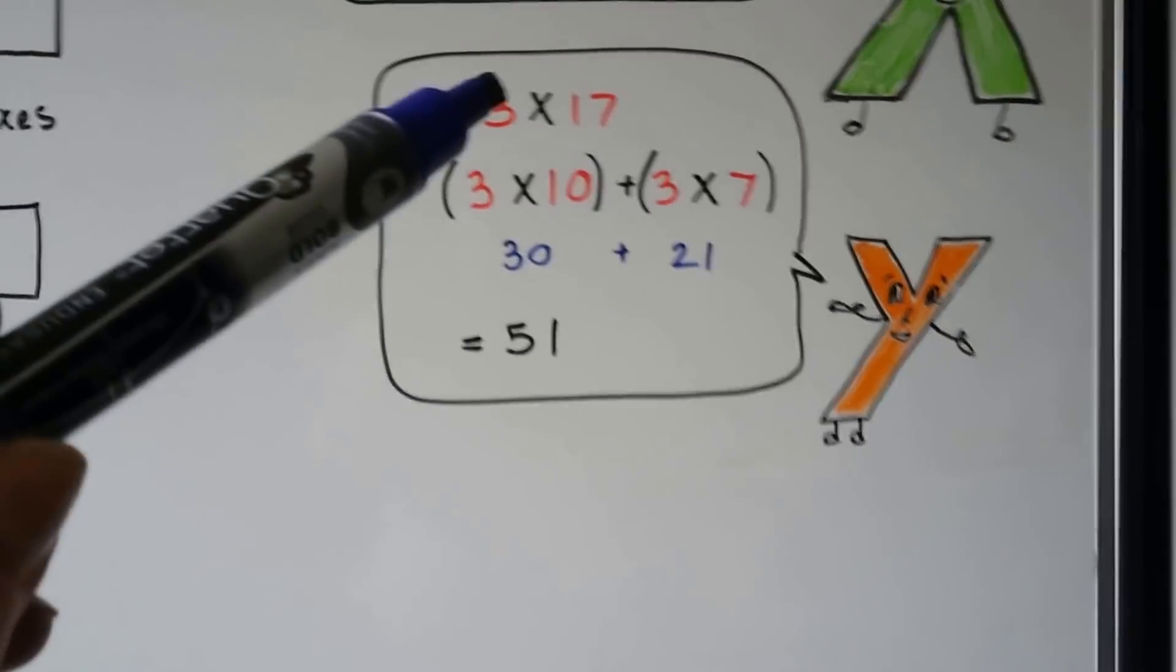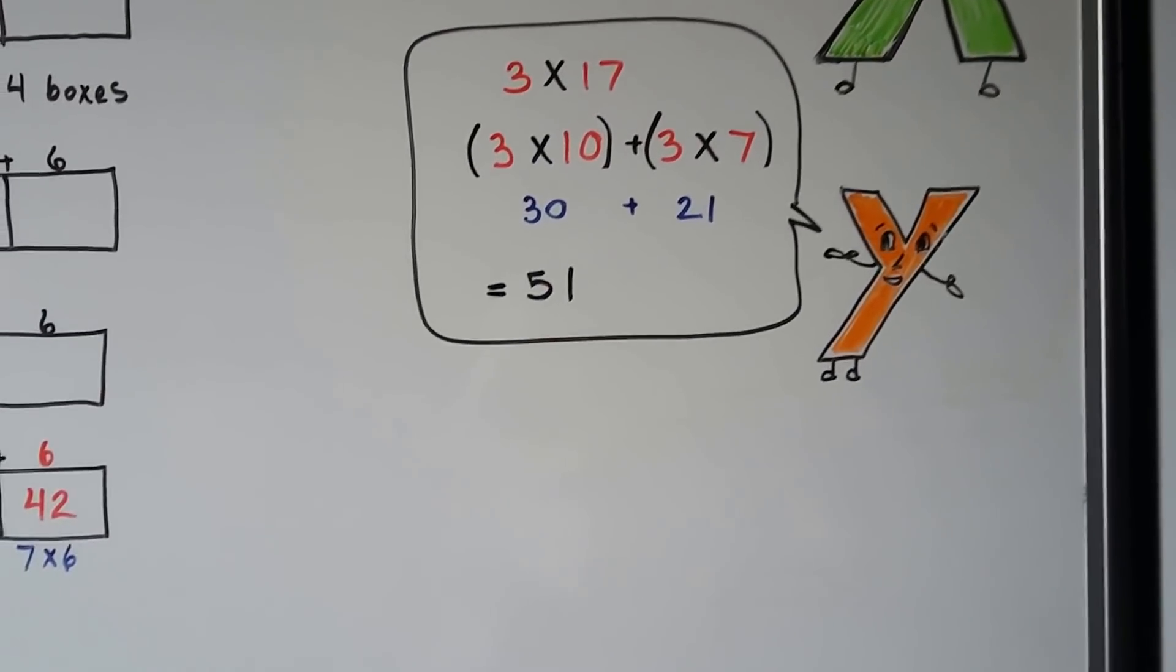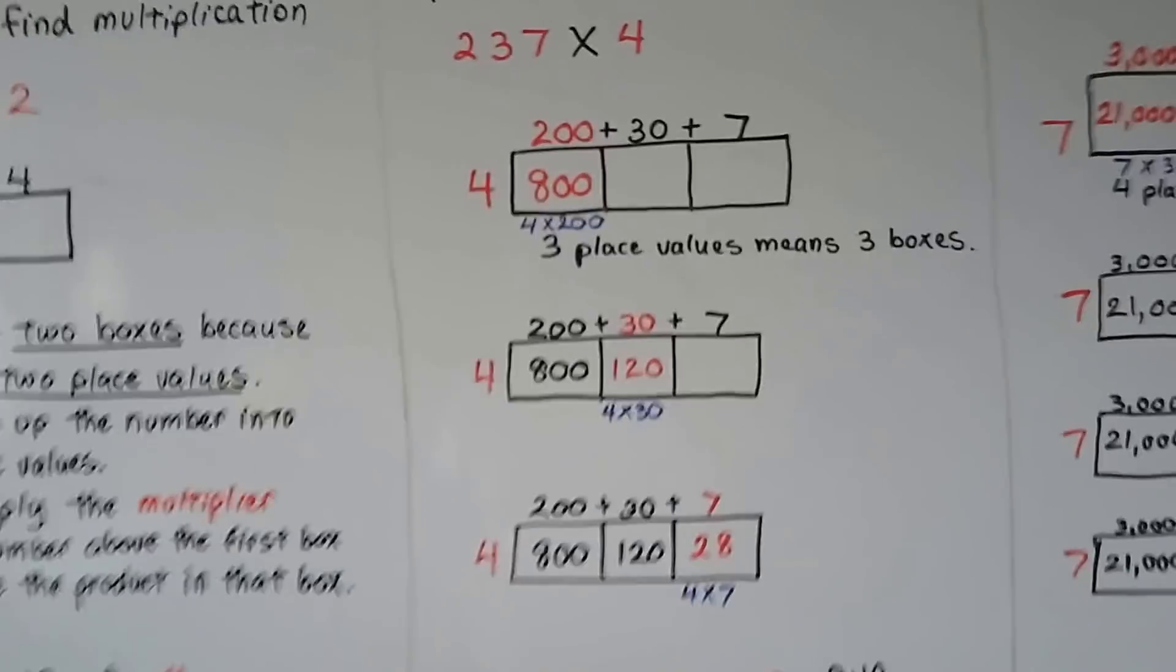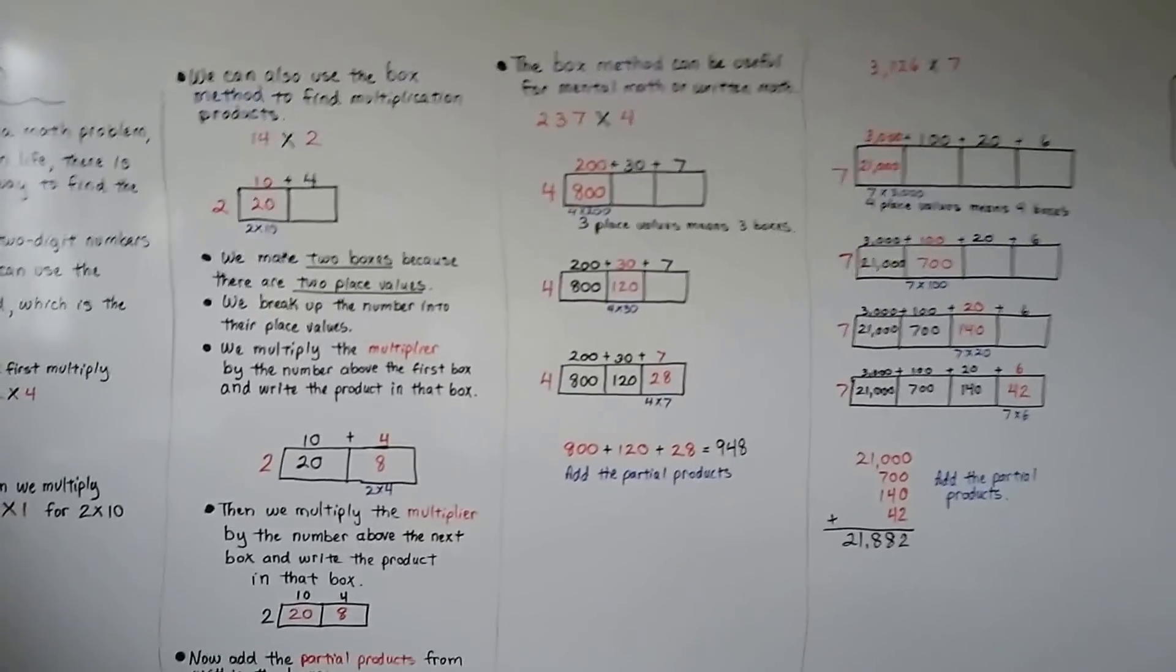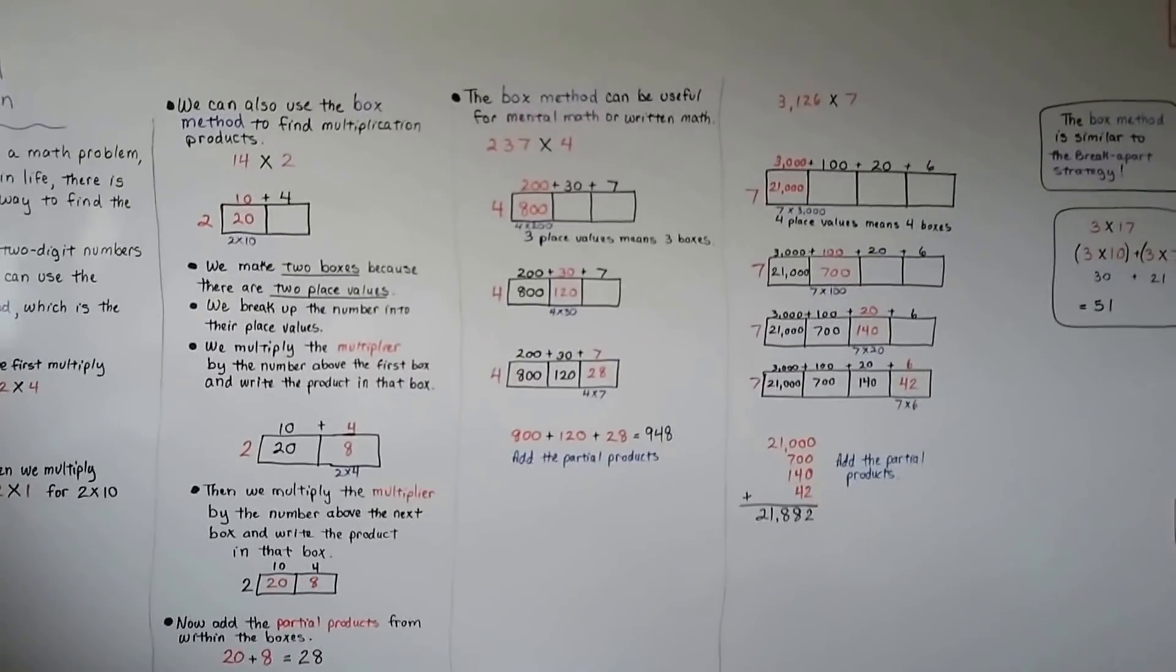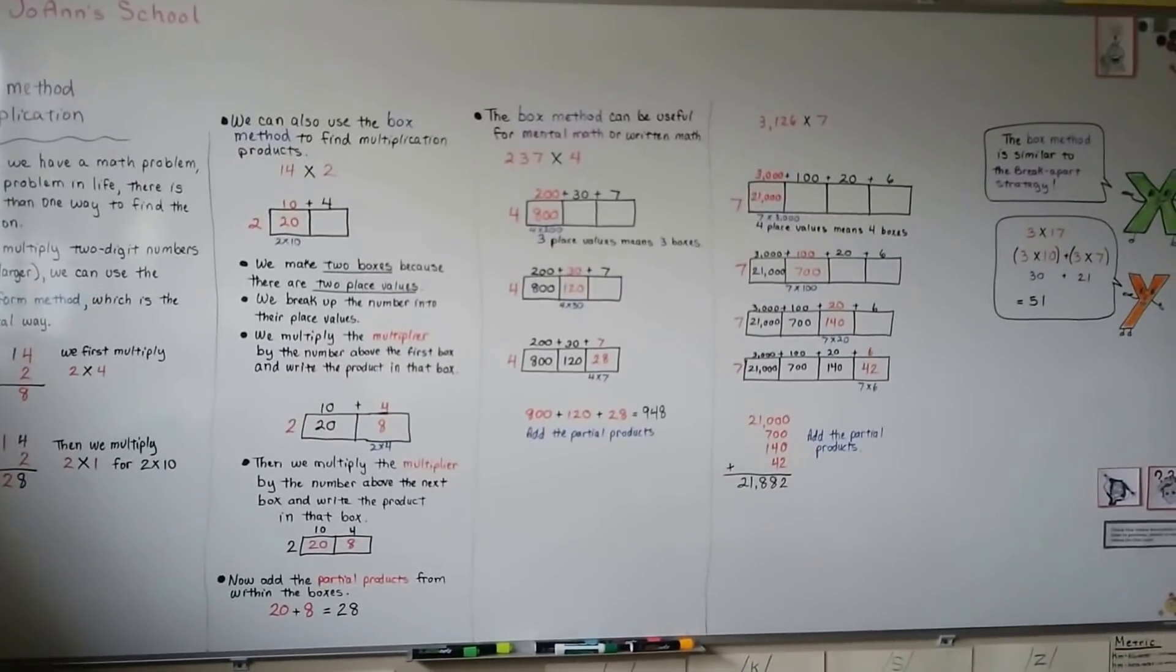My trick for doing mental math is you start with the bigger numbers first. You start with the bigger place value. Like 10. Even when you're adding, if you wanted to add two-digit numbers, mental math, you start with the tens place instead of the ones place like you would on paper. Because sometimes that's easier for mental math.